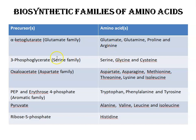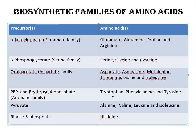In the serine family, the precursor is 3-phosphoglycerate, and the amino acids formed are serine, glycine, and cysteine. For the aspartate family, the precursor is oxaloacetate, and the amino acids formed include aspartate, asparagine, methionine, threonine, lysine, and isoleucine. For the aromatic family, the amino acids are tryptophan, phenylalanine, and tyrosine, with precursors PEP and erythrose-4-phosphate. For the pyruvate family, the precursor is pyruvate, and the amino acids formed are alanine, valine, leucine, and isoleucine.